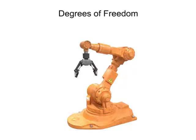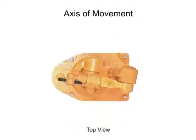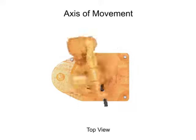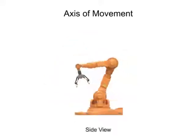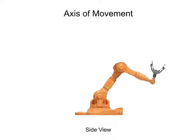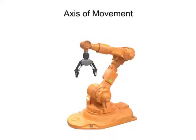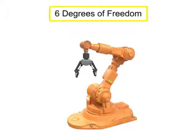Robots come in all different shapes and sizes, but are frequently classed by their degrees of freedom. Each direction of movement on the robot is considered an axis of movement. This robot rotates at the waist, bends forward and back at the shoulder, and moves vertically at the elbow. Each single movement axis is equal to one degree of freedom. This particular robot is equal to six degrees of freedom.